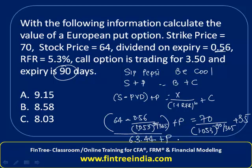So 63.44 plus P equals: 1.053, y^x, (90 ÷ 365) =, then 1/x multiplied by 70 gives 69, plus 3.5, so the right-hand side totals 72.61. Subtracting RCL 1 (which is 63.44) gives the value of the put as 9.16. Therefore the correct answer is Option A.